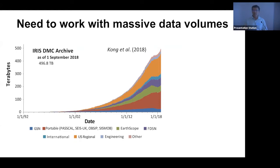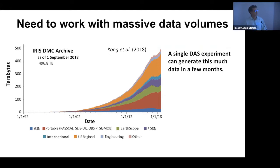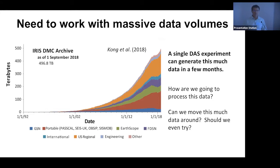One thing I'd like to emphasize is that we're going to have to deal in the very near future with very large data volumes. From Kong et al.'s paper, there's something like half a petabyte of data in the IRIS archives. But data volumes are going to grow really rapidly — a single DAS fiber optic experiment running for several months can generate as much data. We need scalable algorithms that can extract information from large data sets, and we have to ask whether we can even move this much data around.